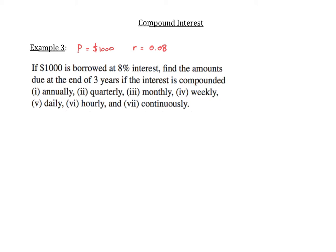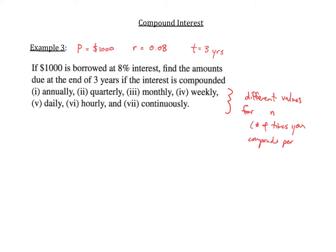We want to find the amount due at the end of three years, so they're telling us that our t is going to be equal to three years. And then annually, quarterly, monthly, weekly, daily, hourly, and continuously — these are all different n values. N is the number of times you compound per year.